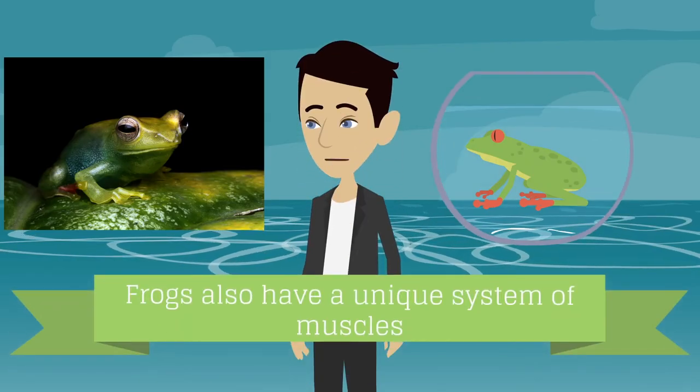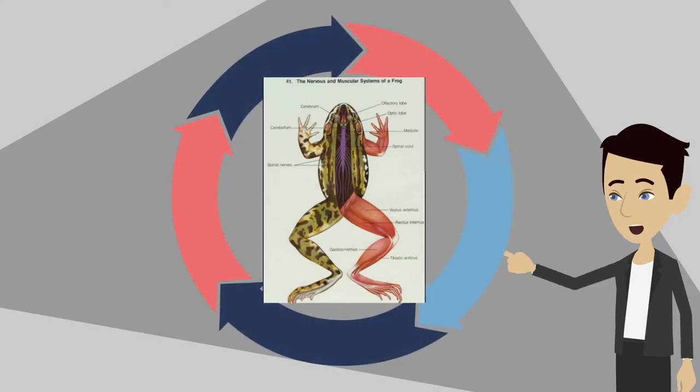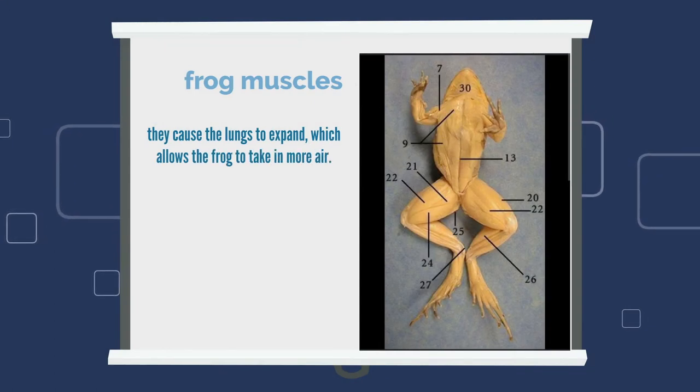They are able to extract a large amount of oxygen from the air and deliver it to the frog's bloodstream. Frogs also have a unique system of muscles that helps them to breathe. These muscles are located near the rib cage and are responsible for expanding and contracting the lungs. When the muscles contract, they cause the lungs to expand, which allows the frog to take in more air.